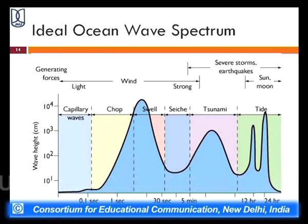Beyond the wind-generated waves, the spectrum includes tsunami conditions caused by earthquakes, where amplitude can reach up to hundreds of meters. The last form is the tide, driven by the gravitational attraction of the sun and moon, occurring in 12 to 24 hour intervals, creating low and high wave conditions experienced especially in coastal areas. This is an idealized ocean wave spectrum.